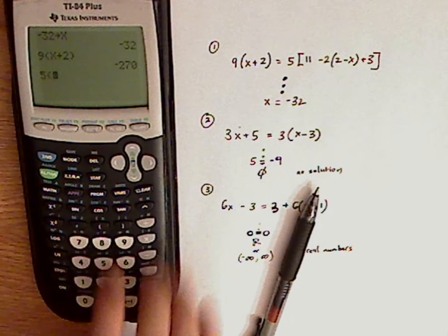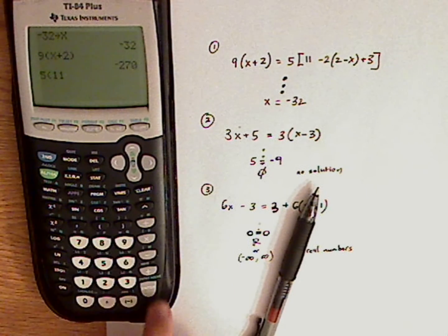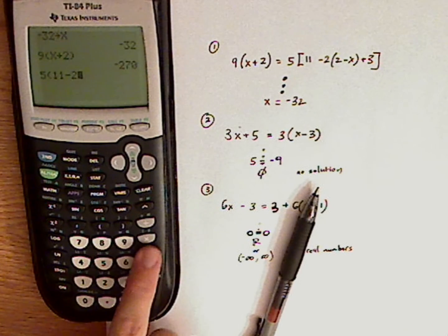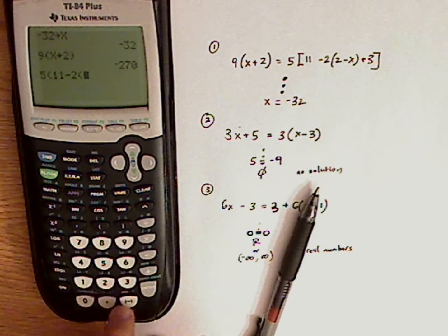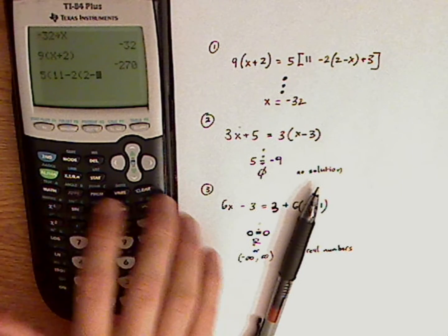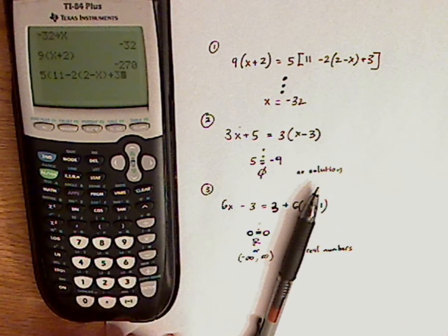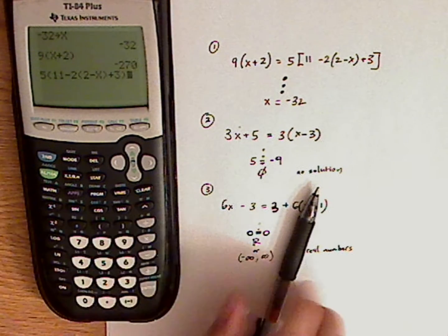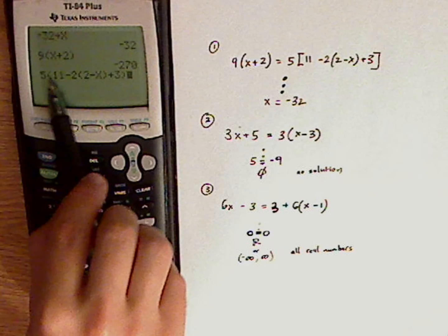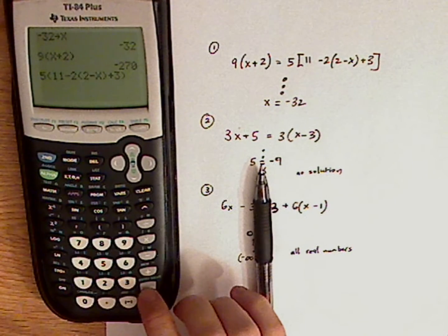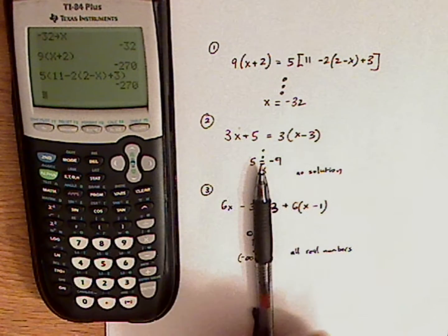So parentheses 11 minus 2, again minus sign, parentheses 2 minus x, close parentheses plus 3. And then close the parentheses again which will close this parentheses right here. So what should happen is both should be equal to each other.